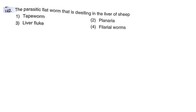Next question: The parasitic flatworm dwelling in the liver of sheep. Options: tapeworm; planaria; liver fluke; filarial worms. The correct option is option number 3: liver fluke.